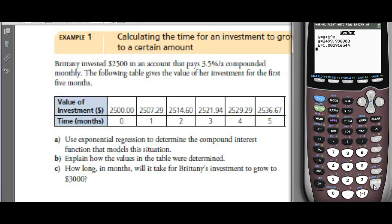The result shows 2499.998 — that's the starting amount, and we'll write that as 2500. So the equation is Y = 2500 × 1.0029 to the power of X. If asked to run an exponential regression and give the equation, that's how you write it out — we'll tell you what to round to.